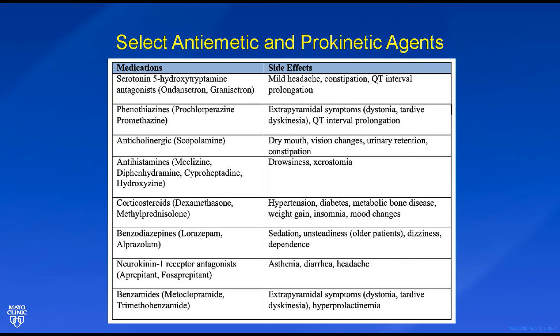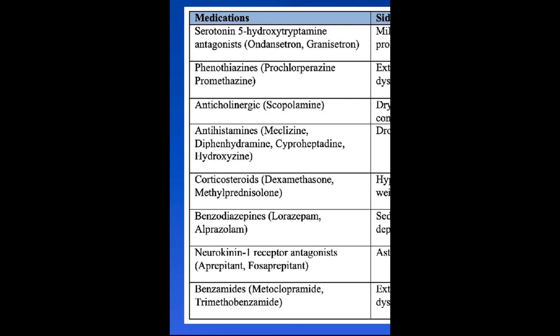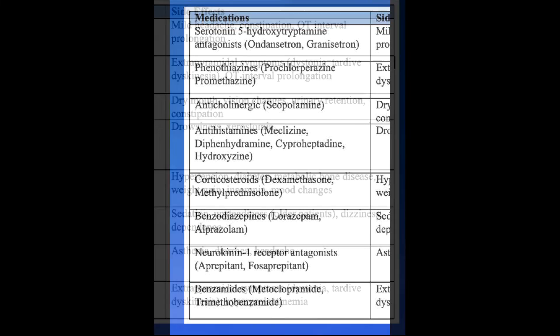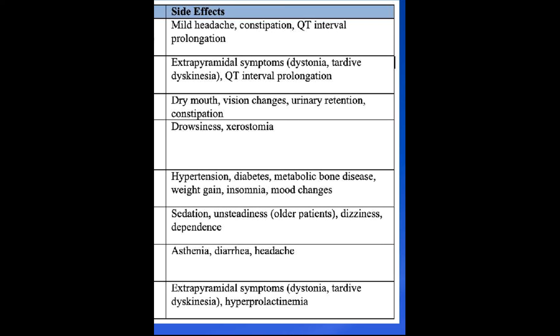Here we can see a table of select anti-emetic and prokinetic agents. Selected anti-emetic agents include the serotonin antagonists, the phenothiazines, anticholinergic agents, antihistamines, corticosteroids, benzodiazepines, neurokinin-1 receptor antagonists, and the benzamides. On the right, you can see the different side effects for each of these agents.